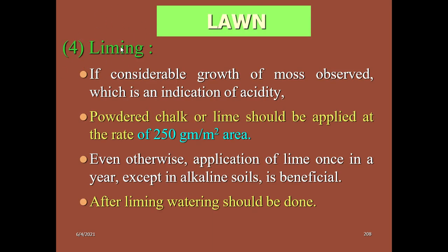Liming is important in the lawn because we regularly water the lawn, especially through sprinkler irrigation, so moss growth will be more due to high moisture. To avoid moss growth, we use powdered chalk or lime applied at the rate of 200 grams per meter square. Remember: liming is the important horticulture operation followed in the lawn to prevent moss growth.